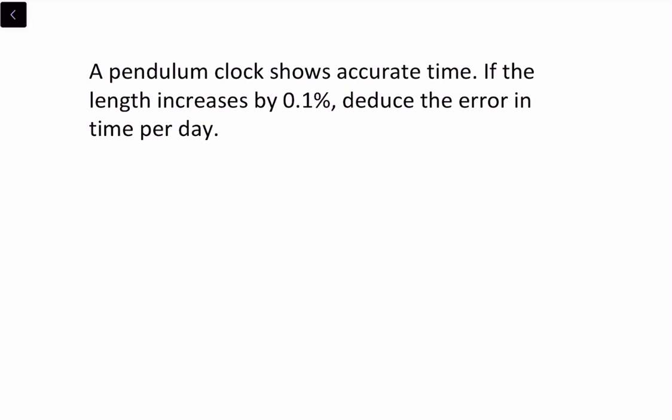Now, in this problem, they have said that the pendulum clock shows accurate time. But its length is increased by 0.1%, then naturally it shows wrong time. They asked us to find the error in time in a day.